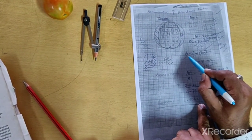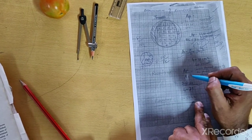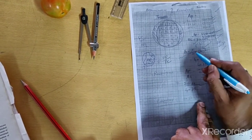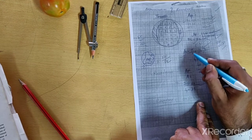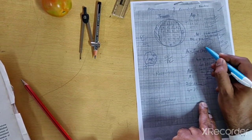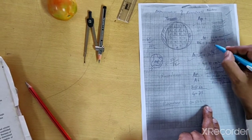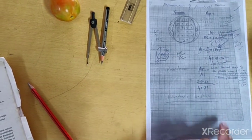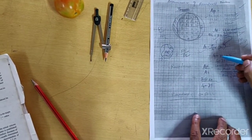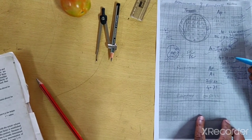Then in order to determine the AC that we will require in our formula, AC is determined by using formula pi by 4 into DC square. By putting the value of DC in this formula, we will get 40.71 cm square.